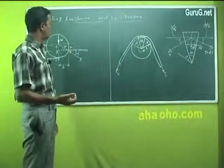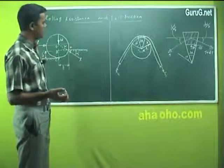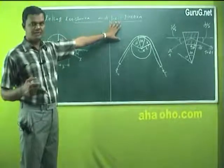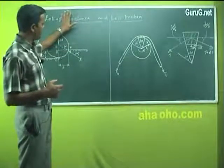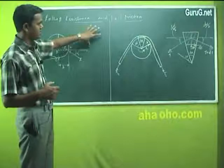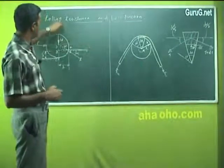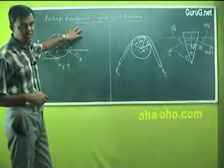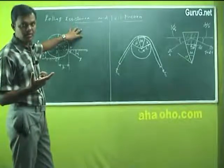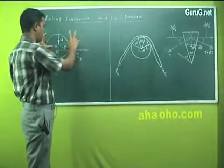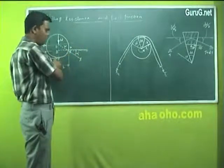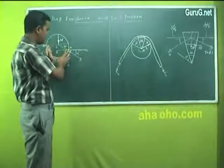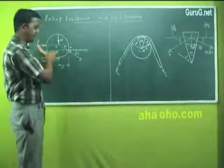The last topic of this first chapter on friction is rolling resistance, and we will also go for belt friction. Rolling resistance is what happens when you roll a body on a surface — not rolling one ball on another body, but a sphere or ball placed on a surface and then applied with some force, say P.